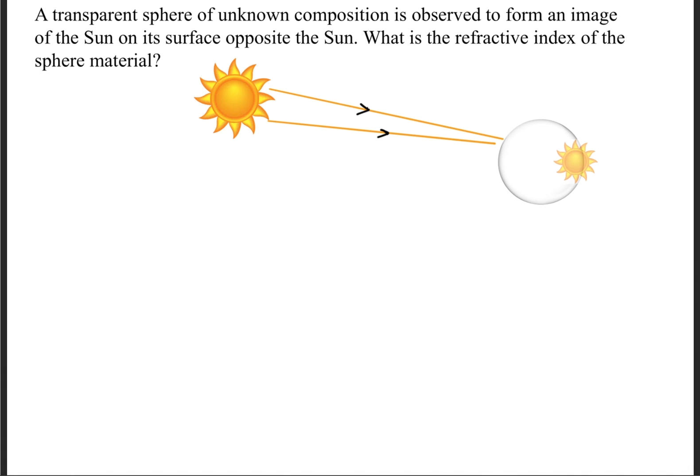But I digress. So we need to use this single surface refraction formula. Now, like I was saying earlier, the light rays are coming in incident, and it's striking this surface right here. An image is forming on the opposite side.